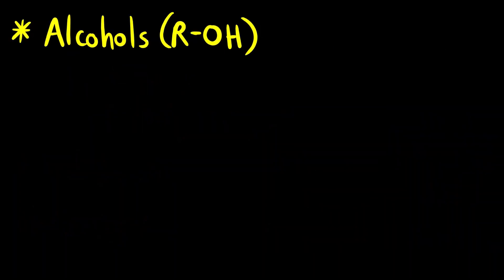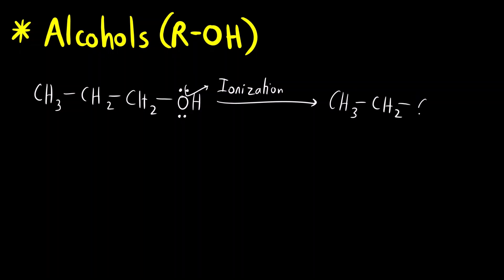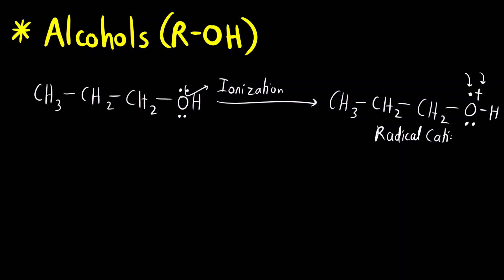Let us see with the help of an example — alcohols. Let us take an example of 1-propanol: CH₃CH₂CH₂OH. Oxygen has a lone pair. The first step is removal of the most loosely bound electron from the molecule — that is, an electron will be removed from the lone pair on oxygen, the non-bonding electron pair. This step is called ionization. So we get CH₃CH₂CH₂OH with a radical and a positive charge on oxygen — this is called a radical cation or molecular ion.